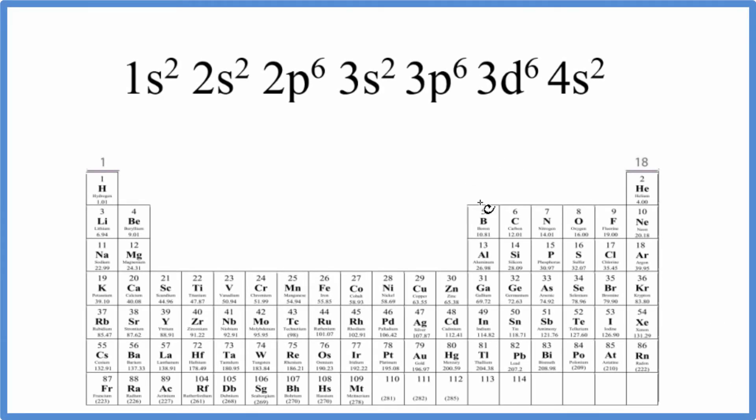There are two main ways to figure out which element on the periodic table is represented by this electron configuration here that ends in 3d⁶4s².